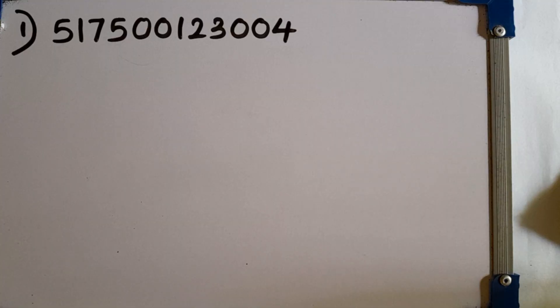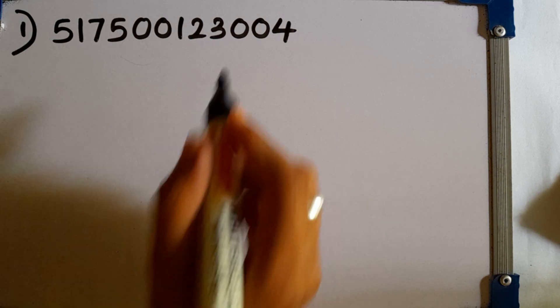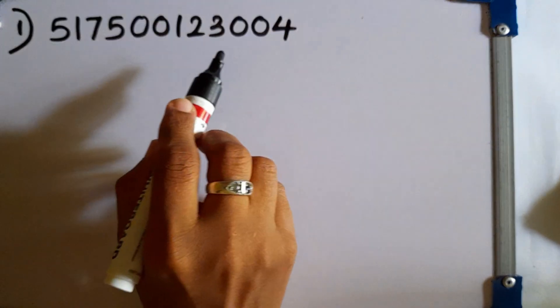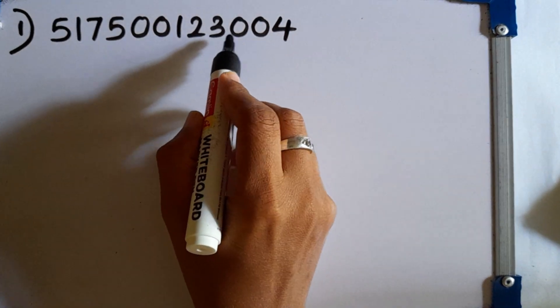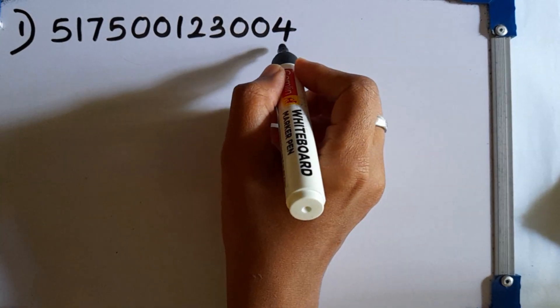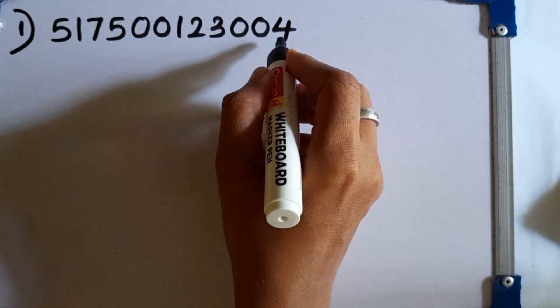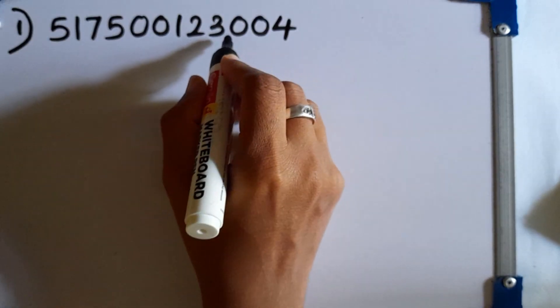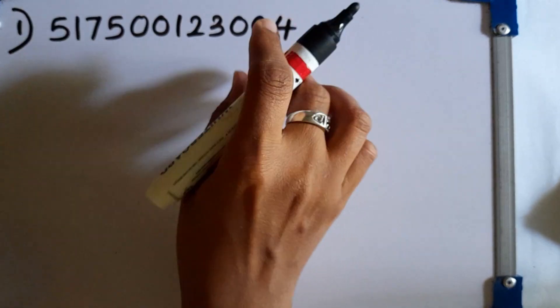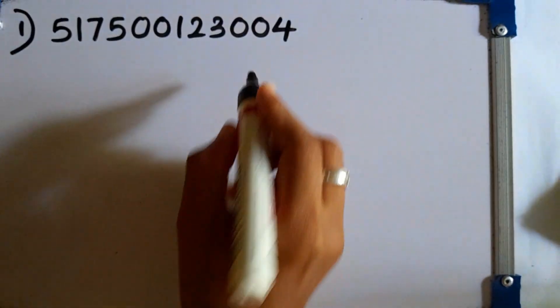First question: write the given number in standard form. How to write a number in standard form? We have to start from the ones place and group the numbers with 3 digits.